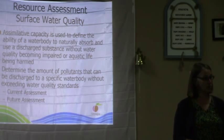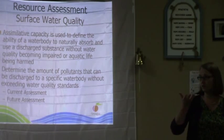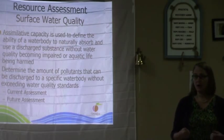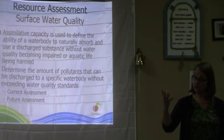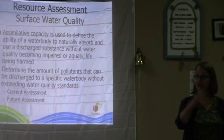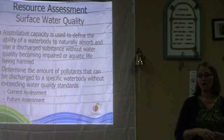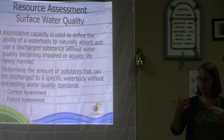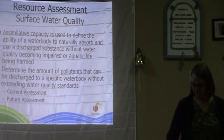We were determining the amount of pollutants that could be discharged into those waters without exceeding water quality standards. We were looking at current standards, current permit loads, and future projected loads. We were also looking at the landscape — current land use and projected future land use. In some areas of the state we did that work; in some areas we did not.